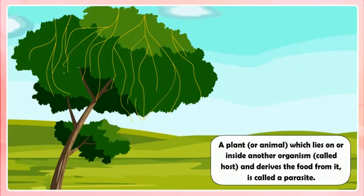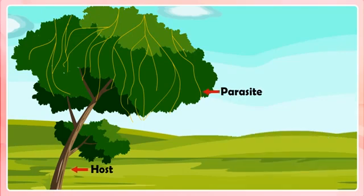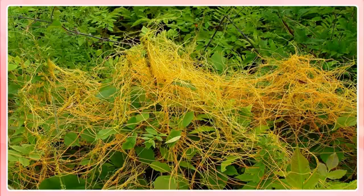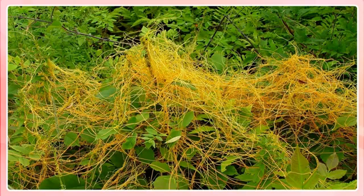Parasites. A plant or animal which lives on or inside another organism called a host and derives food from it is called a parasite. An example of a parasite plant is the cascuta. A cascuta plant does not have chlorophyll — we can see from the picture it is yellow in color. Therefore, it cannot synthesize its own food and takes ready-made food from the tree or plant on which it climbs.